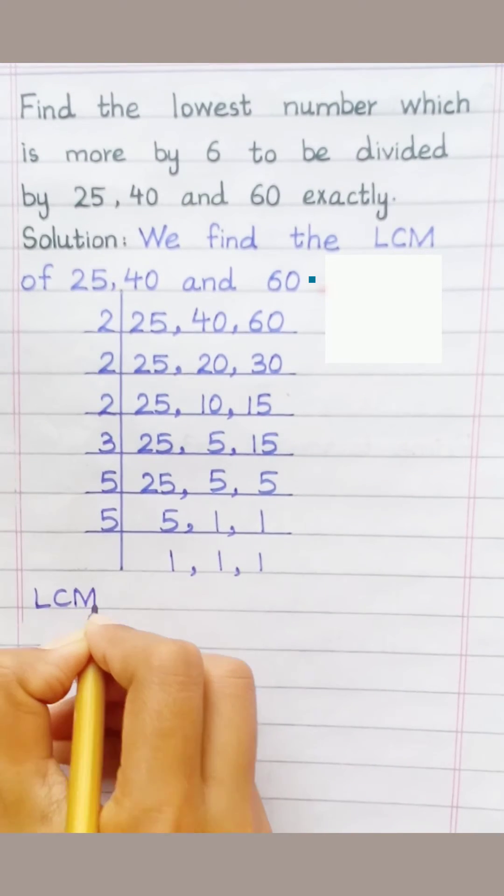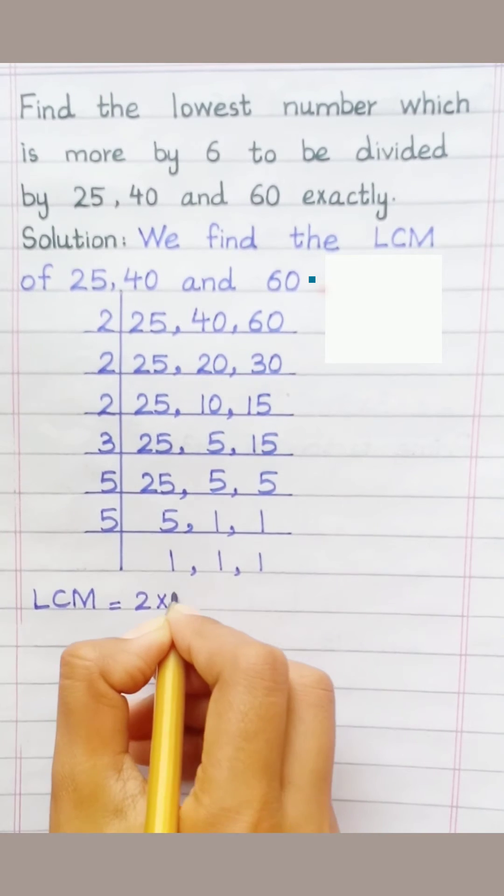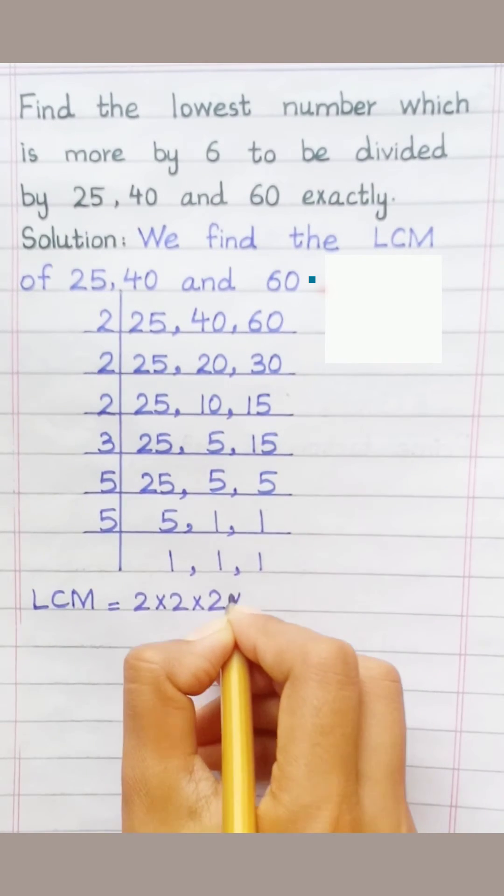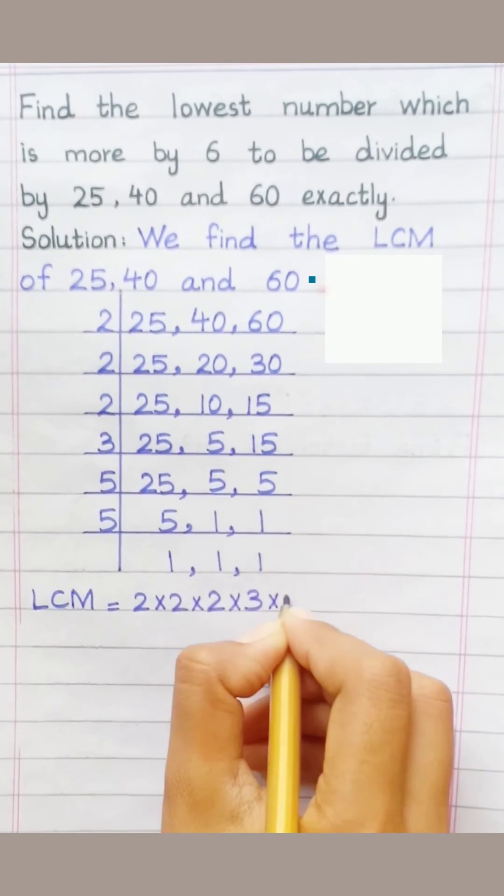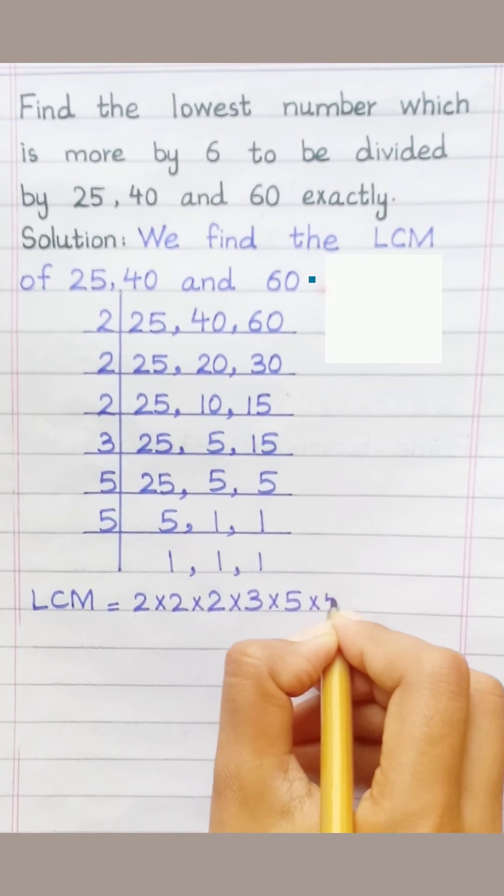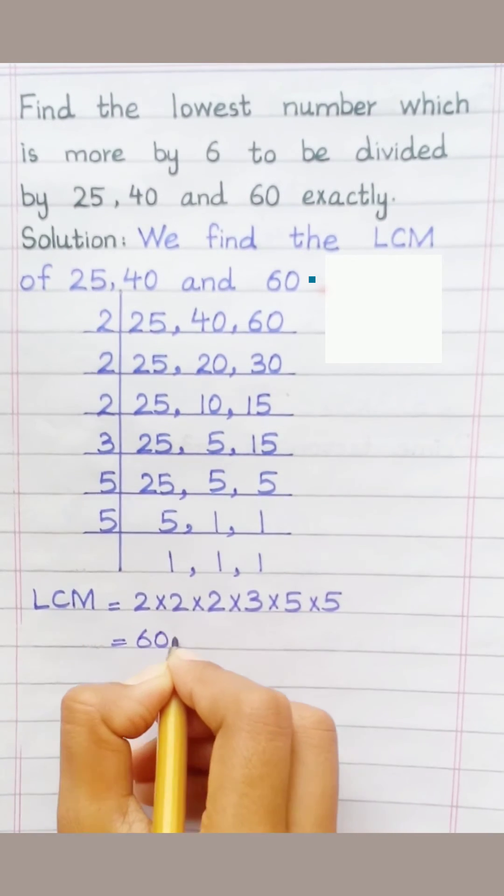LCM equals 2 multiply 2, multiply 3, multiply 5, multiply 5, equals 600.